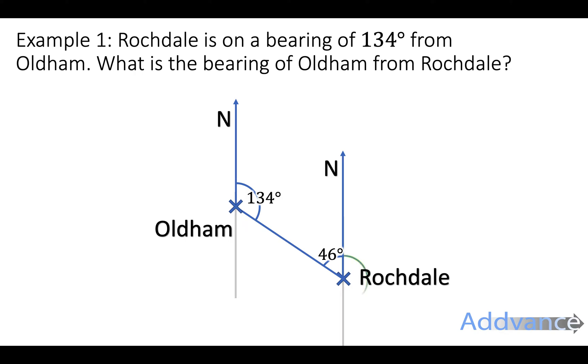So this is 46 degrees here. And now I can do, to find the bearing, which is this green angle from clockwise, I do 360 minus 46 because they both add up to 360. Like this, which is 314 degrees. And therefore, Oldham is on the bearing of 314 degrees from Rochdale. And that's our final answer.